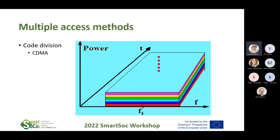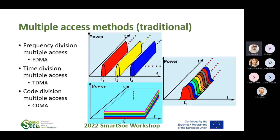In CDMA, everybody has their own key. Your data is encrypted with the key, and you can only read the data you have the key for. For example, you only see the green slice — you cannot read the other users' data because it's gibberish to you. These are the traditional multiple access methods. There's often confusion between access methods and modulation — modulation is not an access method, and the access method is not a modulation, but many people confuse the two.